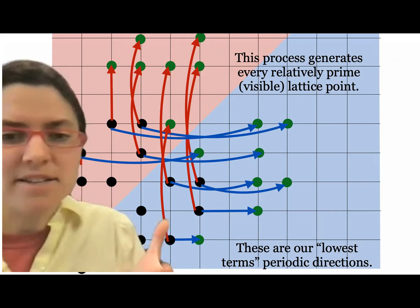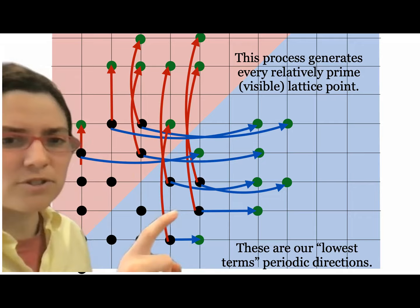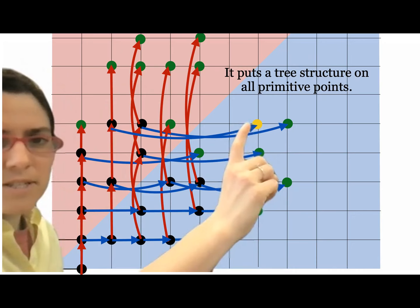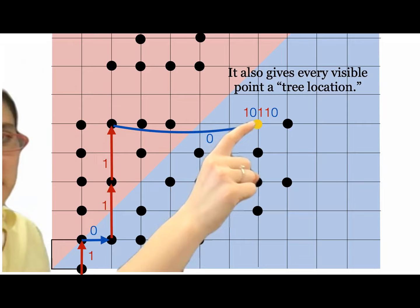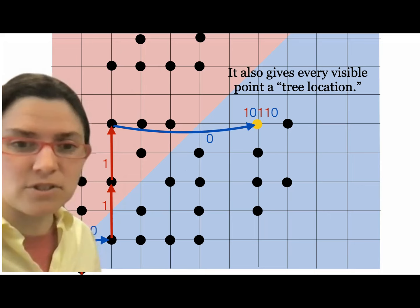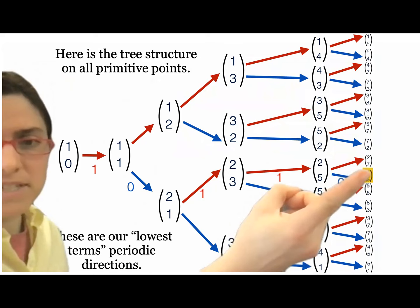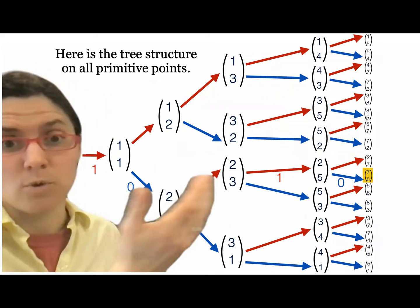In terms of the square and billiards, these are our periodic directions. We care about direction (2,1) because it's periodic, but not (4,2) because it's not in lowest terms. This also gives a tree structure — for any point, you can see exactly how you got there. For example, we went vertical, horizontal, vertical, vertical, horizontal to reach a particular point. Its address might be something like 1-0-1-1-0. This gives a metric on how complicated a fraction is — what level of the tree it arises at. The tree continues infinitely, and these are our lowest-terms periodic directions.